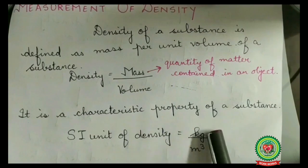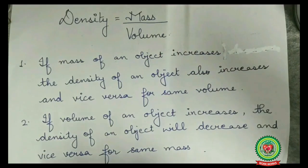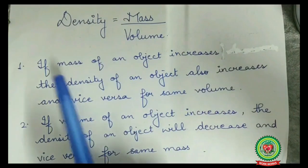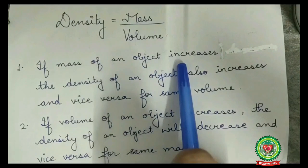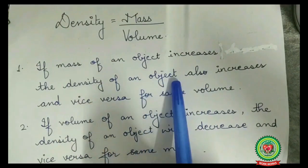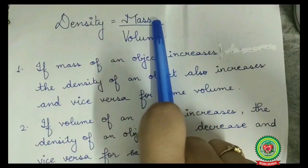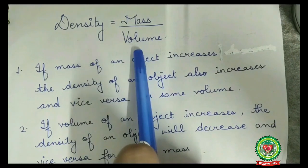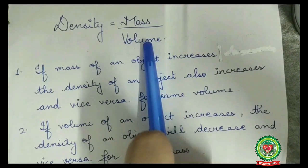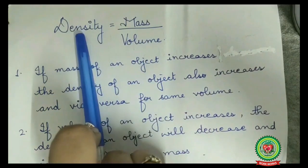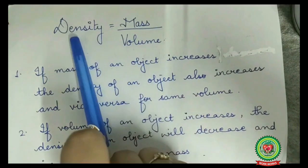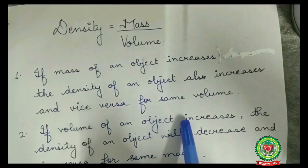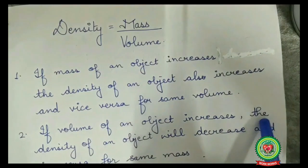Now, how is density related to mass and volume? If the mass of an object increases, the density of an object also increases — for the same volume, mass increases means density increases. If mass decreases, density will also decrease.